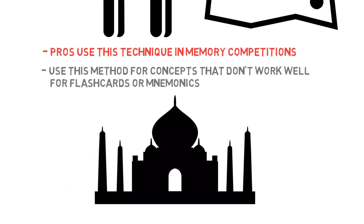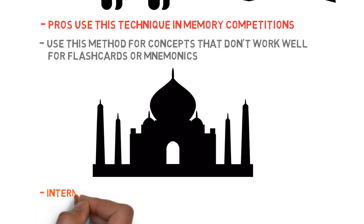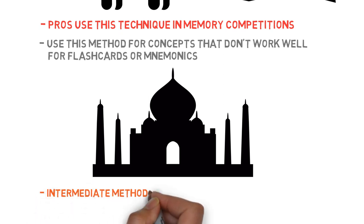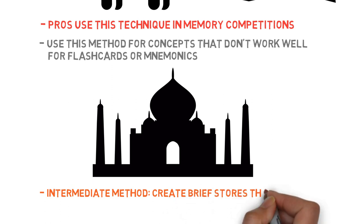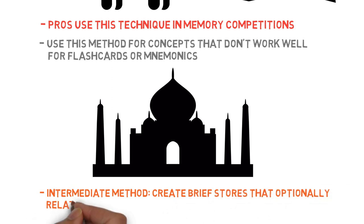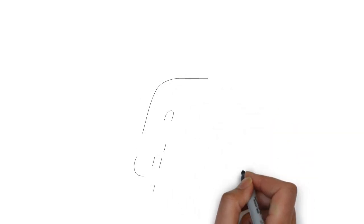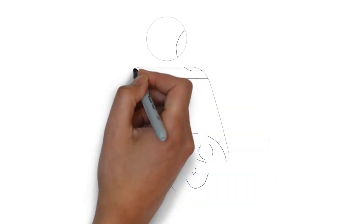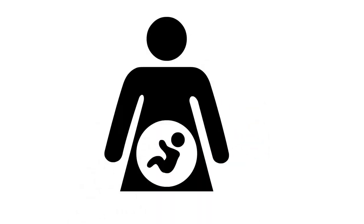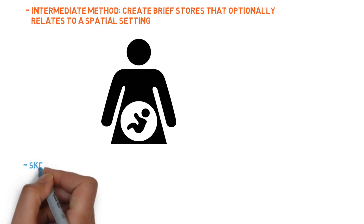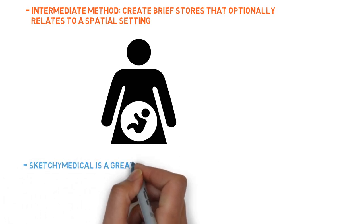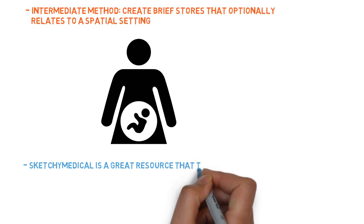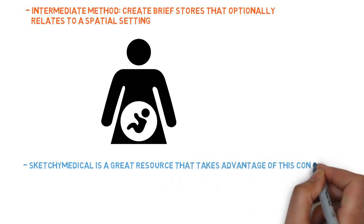An intermediate method that became one of my favorites was creating brief stories that either did or did not have a physical spatial setting involved. For example, to memorize the adverse effects of a drug like tamoxifen, I imagined my friend's sister Tammy. I imagined ridiculous things either about her or happening to her, and each of these represented one of the adverse effects. Years later, I still remember them. For medical students, a great resource that takes advantage of this concept is Sketchy Medical — I used it when studying for micro and found it very useful. They have now expanded it to include pharmacology as well.